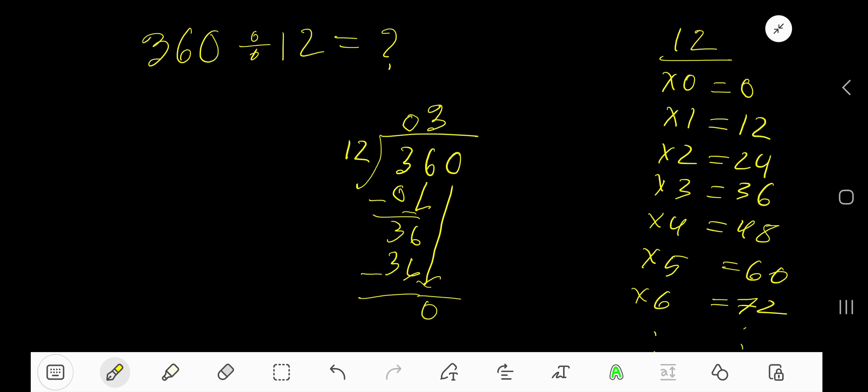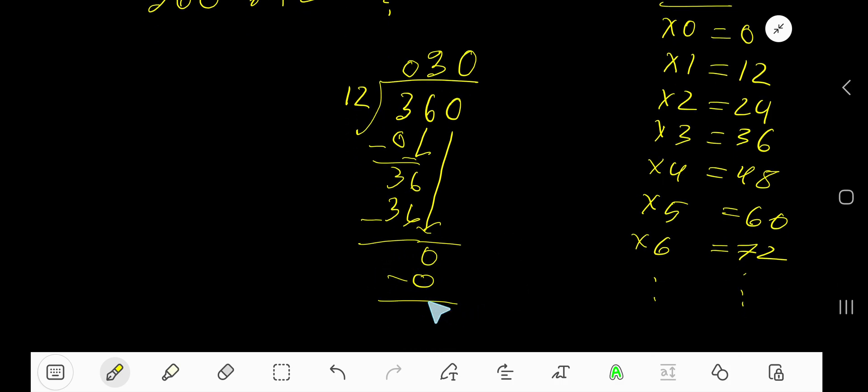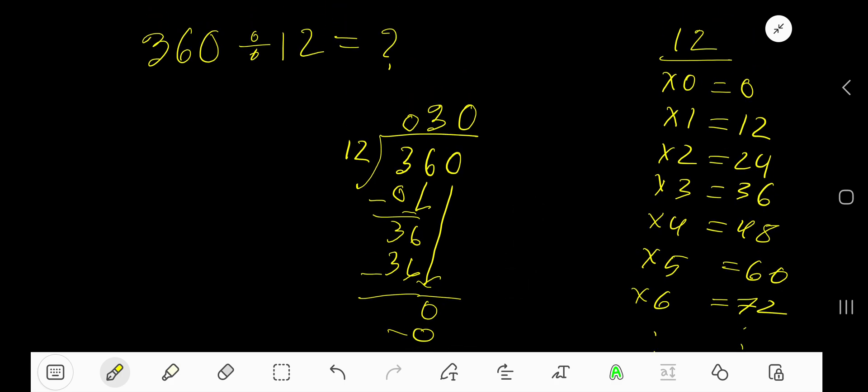12 goes into 0 how many times? 0 times. 0 times 12 is 0. Subtract, you are getting 0 as remainder. Since we have gotten remainder as 0, we are done. So 030, that is 30, is our answer.